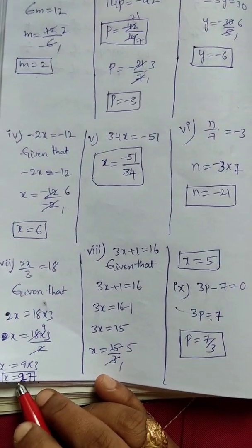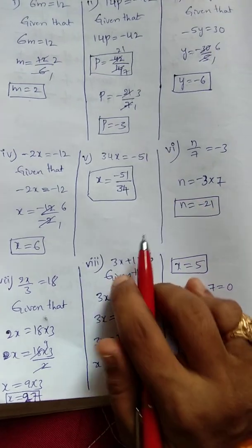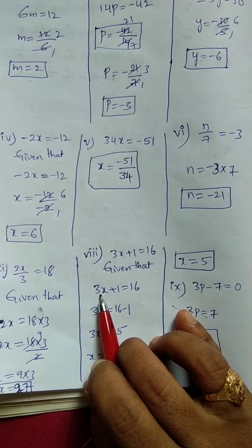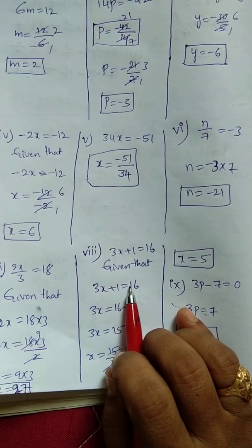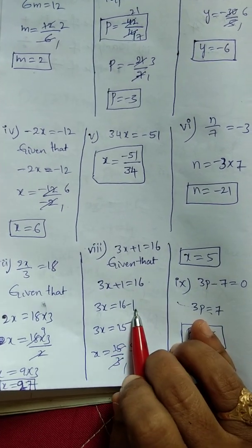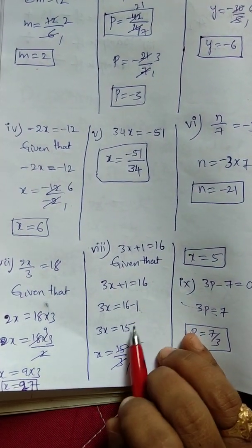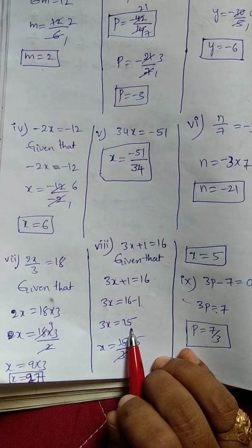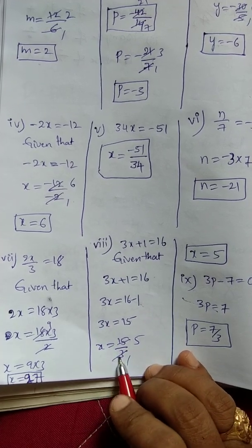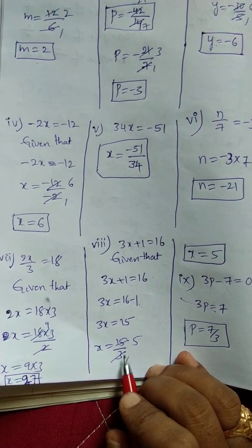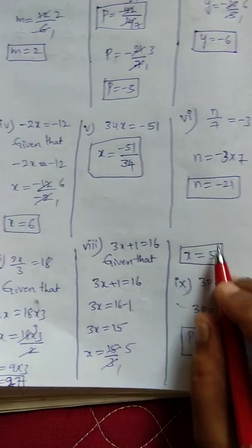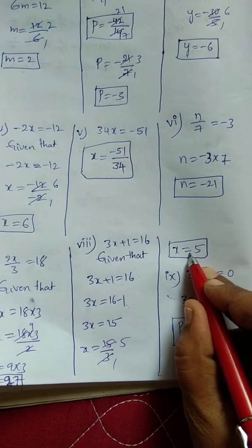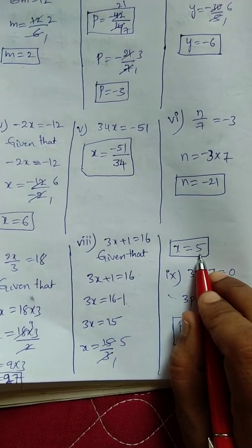Next, 8th bit: 3x plus 1 equals 16. So 3x equals 16 minus 1 — transpose of plus 1 gives minus 1. 16 minus 1 gives 15, so 3x equals 15. x equals 15 by 3 — transpose of multiplication gives division. 3 ones are 3, 3 fives are 15, so x equals 5.